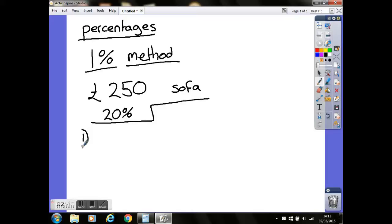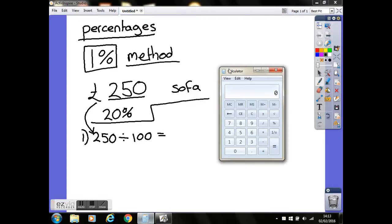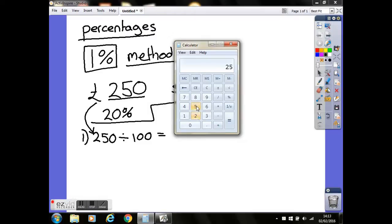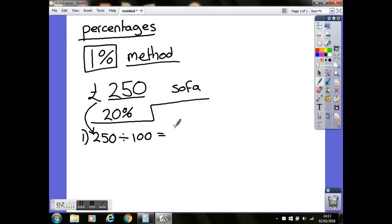Our first step is to find out what 1% is—that's what the 1% method means. We can do this by taking our total amount of money, £250, and dividing that by 100. Don't worry if you can't do this in your head; you'll always have access to a calculator during functional skills tests. 250 divided by 100 equals 2.5.